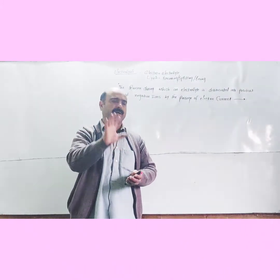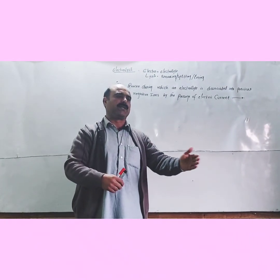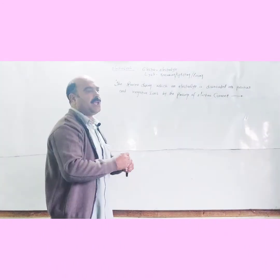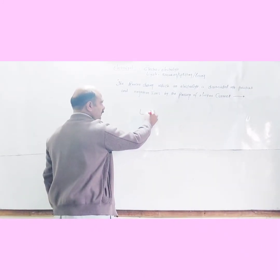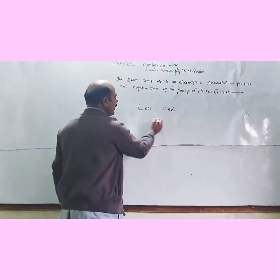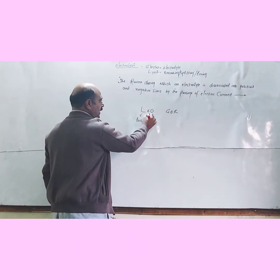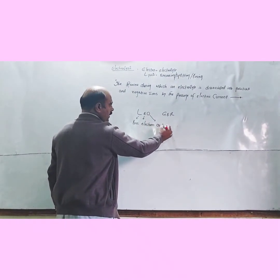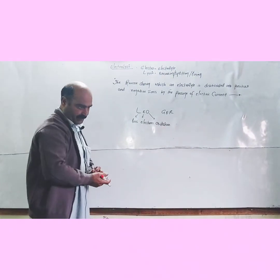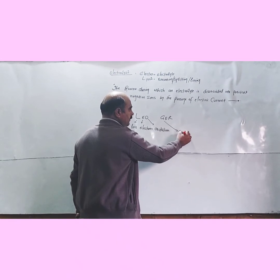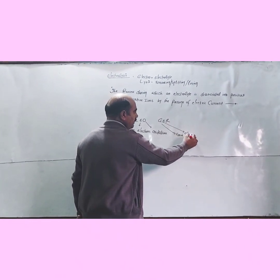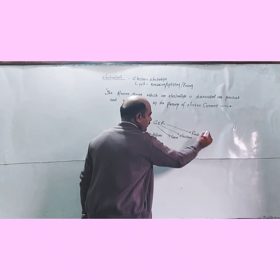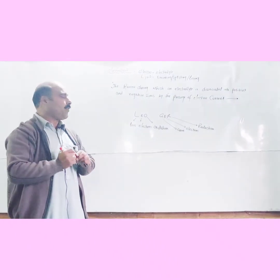The trick is: LEO GER. L stands for Loss, E stands for Electrons, O stands for Oxidation — so loss of electrons is called oxidation. G stands for Gain, E stands for Electrons, R stands for Reduction — so gain of electrons is called reduction.